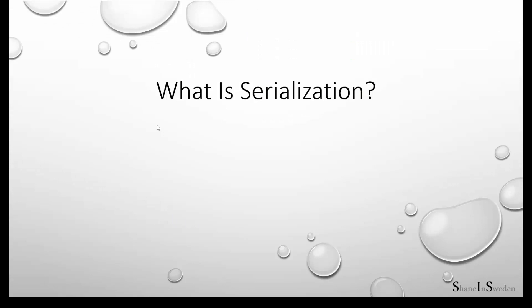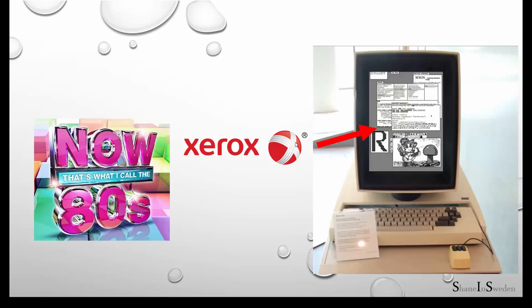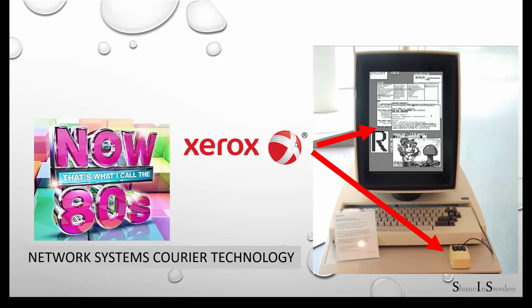So what is serialization? Where did it come from, and why is it important to software development? Serialization has been around for quite a while — an early form of it appeared in the 1980s where the Xerox Corporation, who invented many diverse computer technologies such as the graphical user interface, the mouse, and laser printers, also developed an early form of serialization with their network systems query technology, used for remote procedure calls.